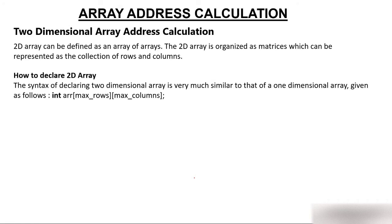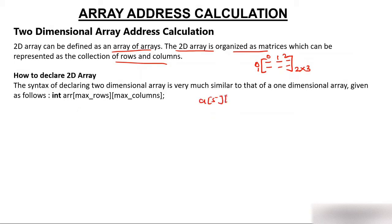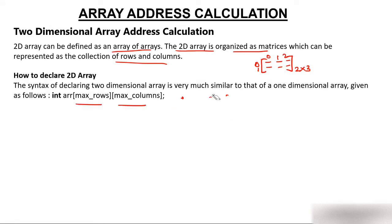A 2D array can be defined as an array of arrays, or it is organized as a matrix. For example, here you have two rows and three columns, which can be represented as a collection of rows and columns — rows zero and one, columns zero, one, and two. To declare a 2D array: int a[5][6] — this means five rows and six columns, with data type integer.